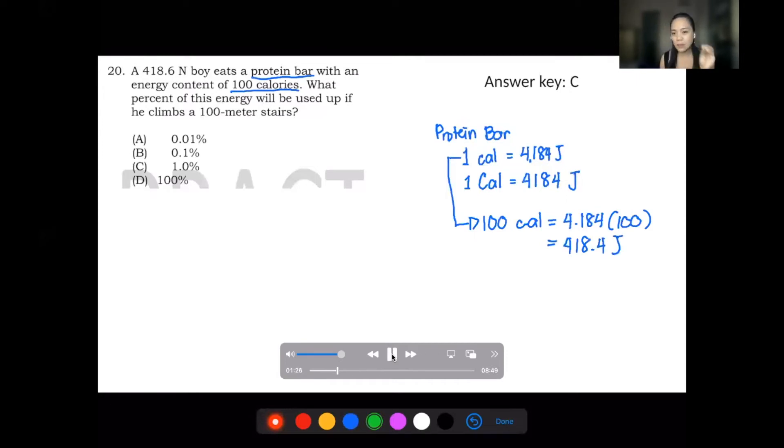Now, let's go to the potential energy, the energy used to climb up the stairs. Potential energy is the energy that has to do with height. So that's mg times height. But mg is weight or gravitational force, which is given in the problem, that is 418.6 newtons. And the height according to the problem is 100 meters. So we put 100 there, with a total of 41,860 joules.